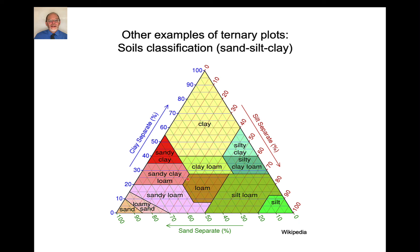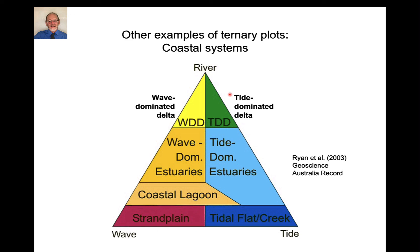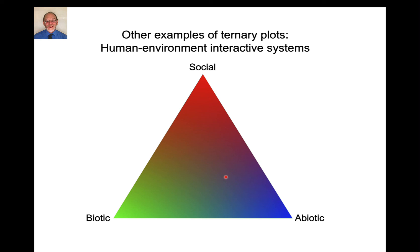Soils classifications, also a ternary diagram with clay at the top, sand in the lower left corner, silt over here. If it's a mixture of approximately equal abundances, then we call it a clay loam. And if it's mostly sand and clay, it's called a sandy clay. If it's mostly silt, it's called silt, and so on. Coastal systems is the system dominated by rivers or waves or tides, and there's this whole classification. Human environment interactive systems are also ternary diagrams, where this is mostly social interactions, biotic interactions, and abiotic interactions. So there are many, many, many different ternary diagrams that we use in the geosciences and environmental sciences just to classify things.